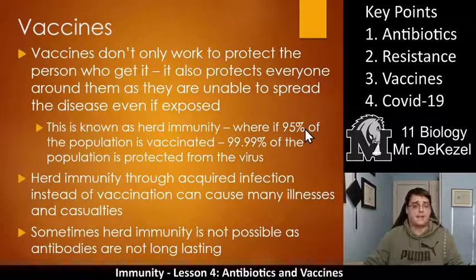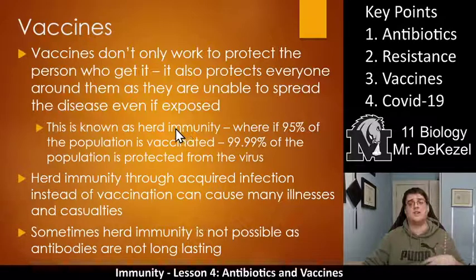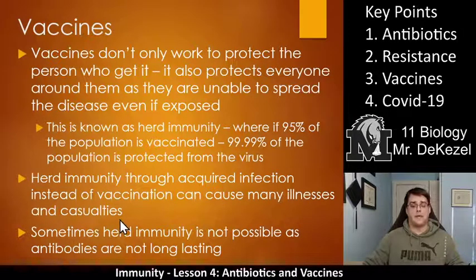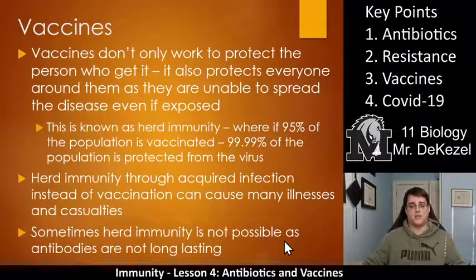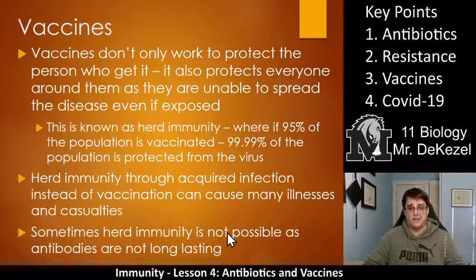That's important because some people can't get vaccinated. Sometimes the elderly can't get vaccinated against a certain disease, so it's important that everyone around them gets vaccinated so there's absolutely no chance of transmission. Herd immunity through acquired infection — through natural infection instead of vaccination — causes many, many illnesses and can sometimes cause many casualties. That's why a vaccine is so important. Sometimes herd immunity is not even possible, as antibodies are not long-lasting — for example with rotaviruses and rhinoviruses, antibodies produced are not long-lasting and therefore you can't have immunity against those.